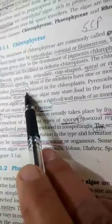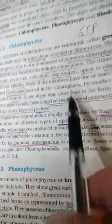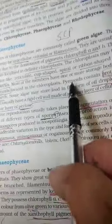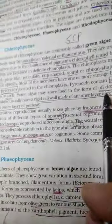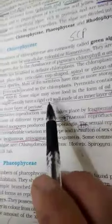In this pyrenoid, which is located in the chloroplast, the food is stored. In this, the food is stored in the form of protein, and it can also be stored in the form of starch, and in some of the algae, the food is stored in the form of oil droplets.